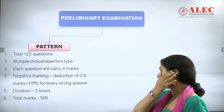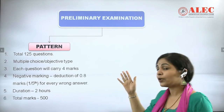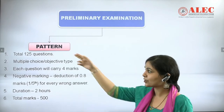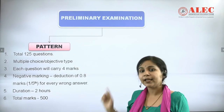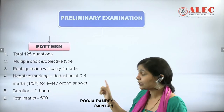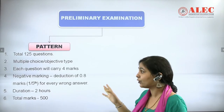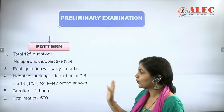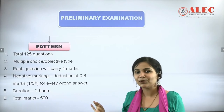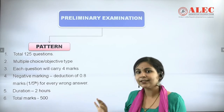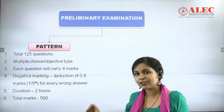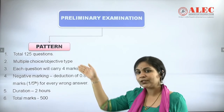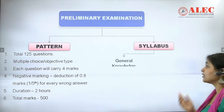The preliminary examination is objective type with multiple choice questions. The total number of questions is 125, and each question carries 4 marks, making the total 500 marks. The duration is 2 hours. Importantly, there is negative marking — if any question is answered incorrectly, there will be a deduction of 0.8 marks. So if you have a doubtful question, please do not attempt it, otherwise you risk losing marks.